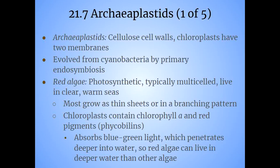There are two I want to discuss: red algae and green algae. Red algae is my favorite because this is what we use for sushi. The sheets of seaweed used to wrap sushi that we call nori — that's actually red algae. Red algae is photosynthetic, it's multi-celled, and we find it in clear, warm seas.